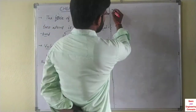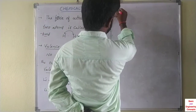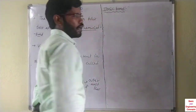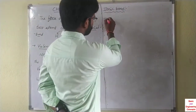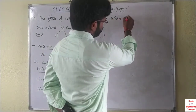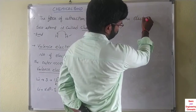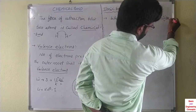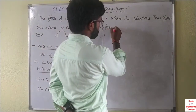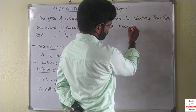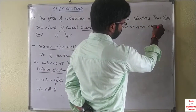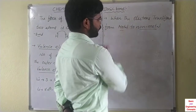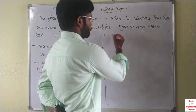Next topic is ionic bond. Ionic bond means when electrons are transferred from metal to non-metal, that is called an ionic bond. Very easy definition — electron transfer from metal to non-metal is called ionic bond.